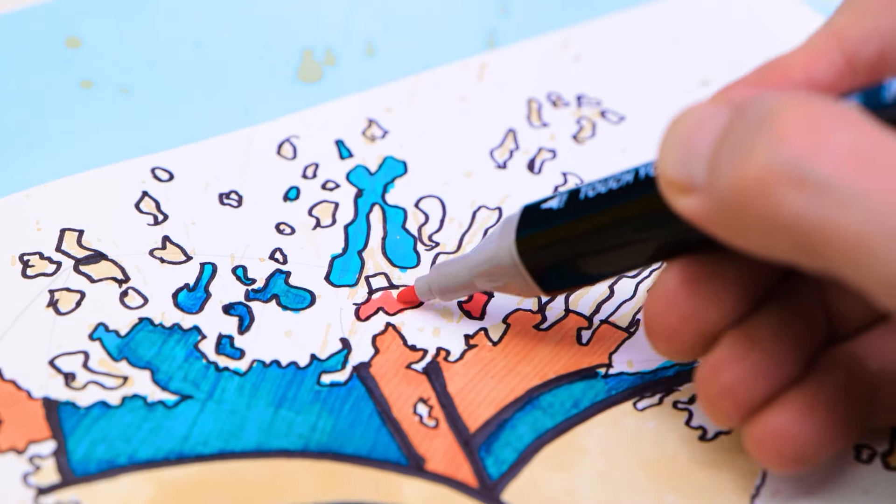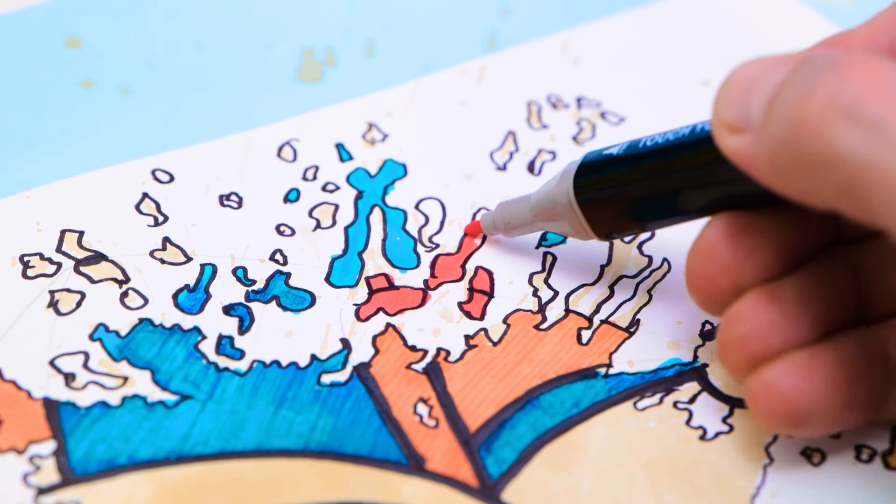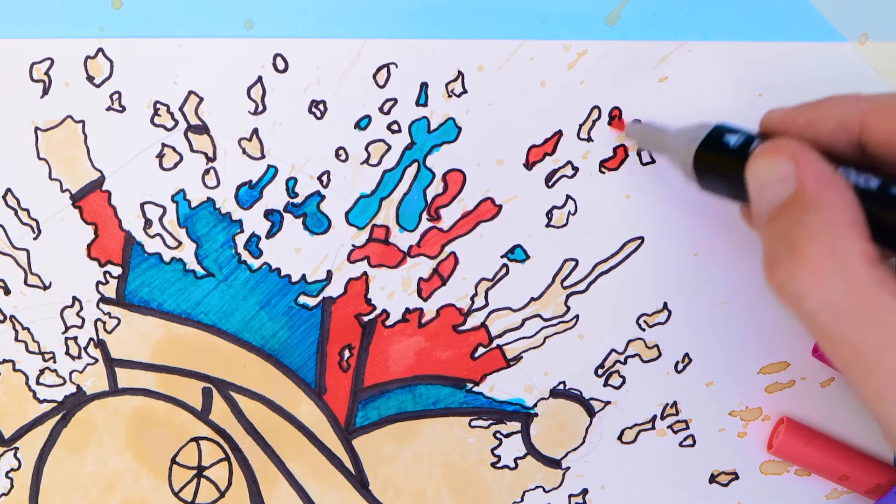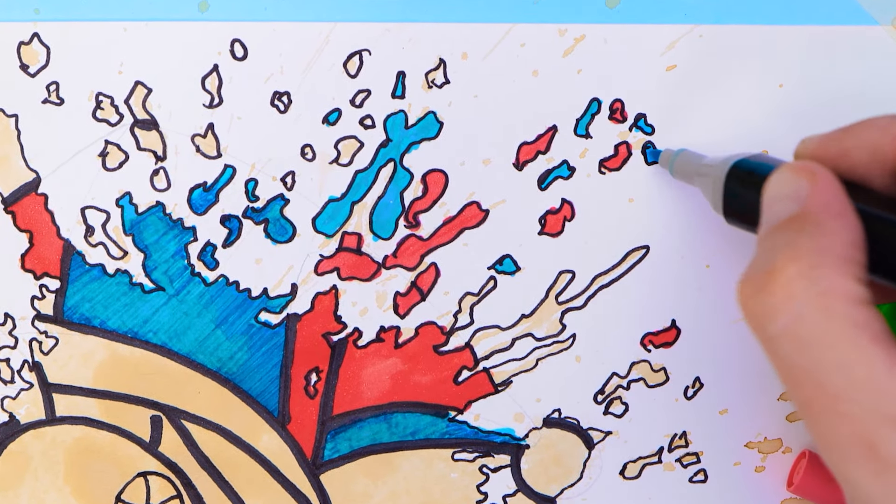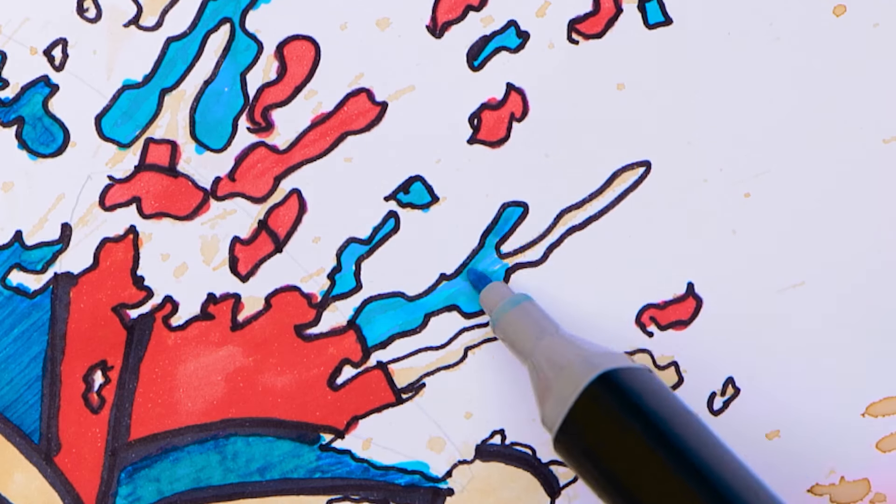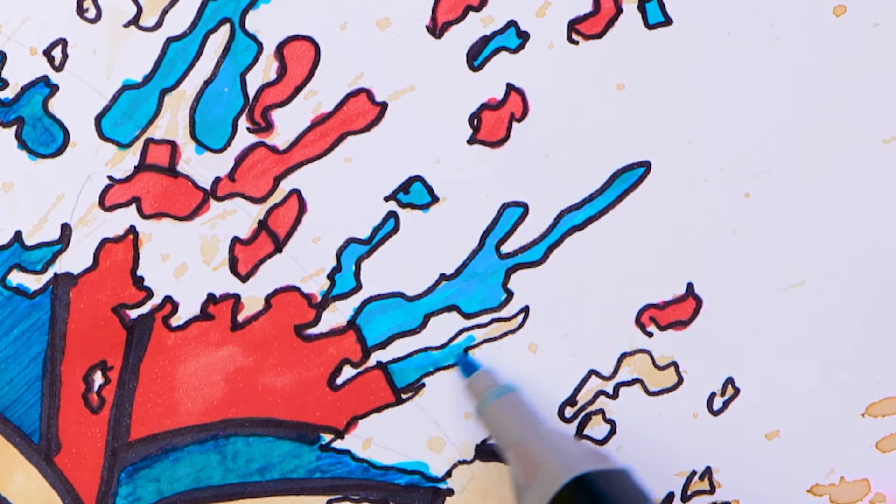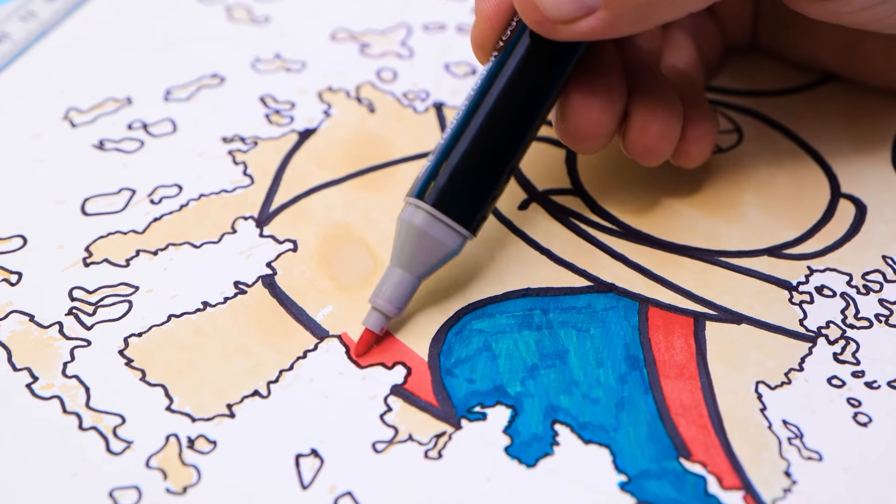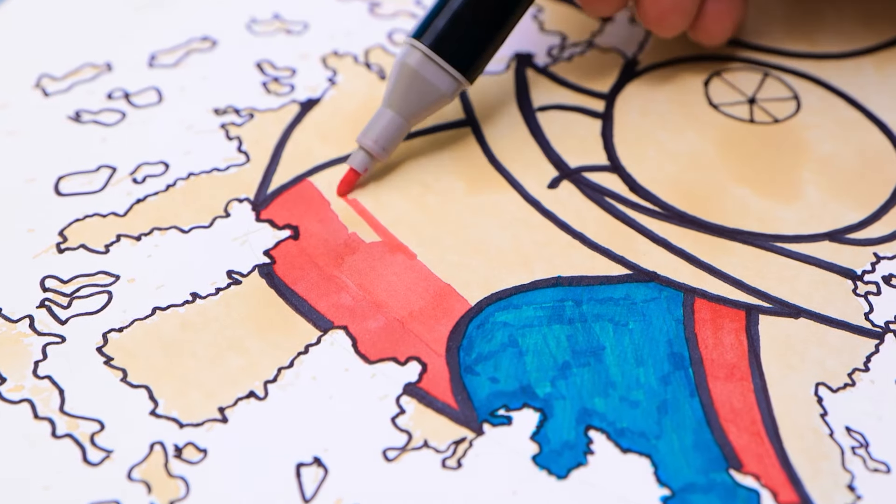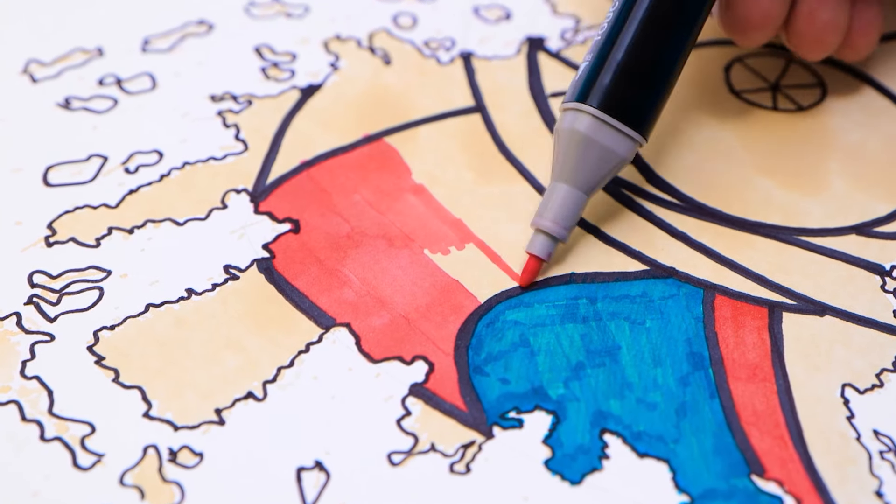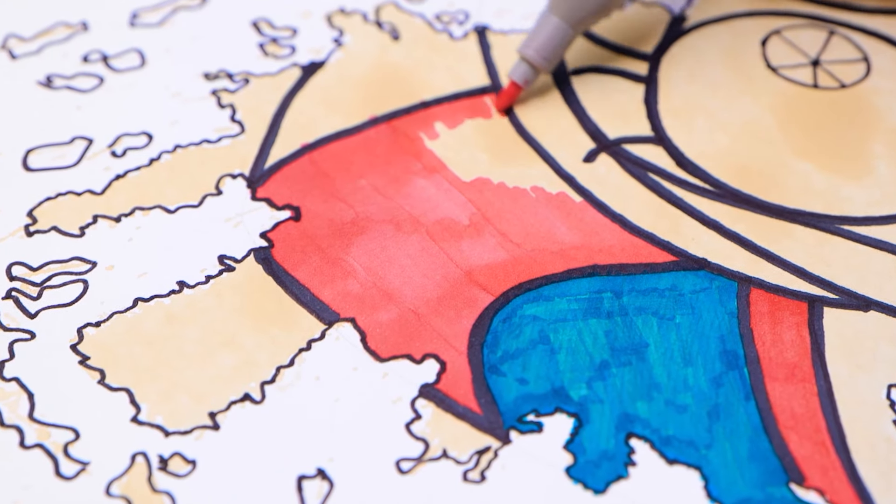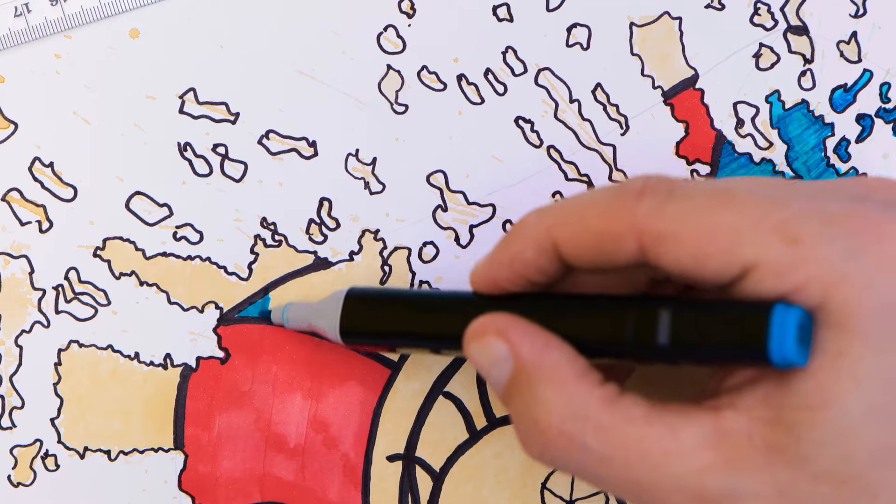Sometimes, I accidentally color outside of the lines. Does that happen to you? But with practice, I don't do it very much anymore. Ooh! More red. What other things are this color? Campfires, poppies, and some peppers are, too.